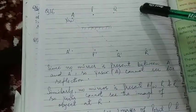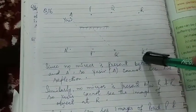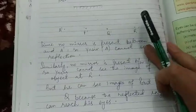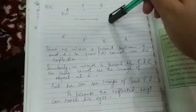Similarly, no mirror is present between R and R dash as well, so Yasir cannot see the image of the object at R also.